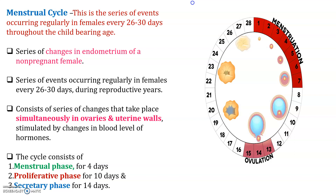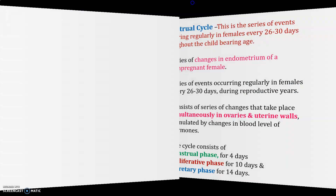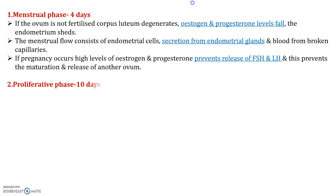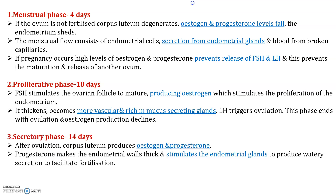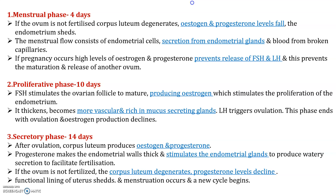What happens exactly during the menstrual cycle? There are changes occurring in the endometrium of the non-pregnant female. Due to this, there are chances of bleeding or breaking of some capillary layers present in the uterus, causing blood to fall. The three stages of the menstrual cycle depend on four factors: follicle stimulating hormone (FSH), luteinizing hormone (LH), and the two sex hormones secreted by females — estrogen and progesterone.